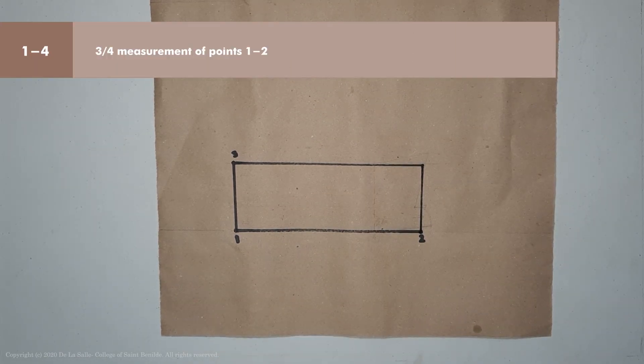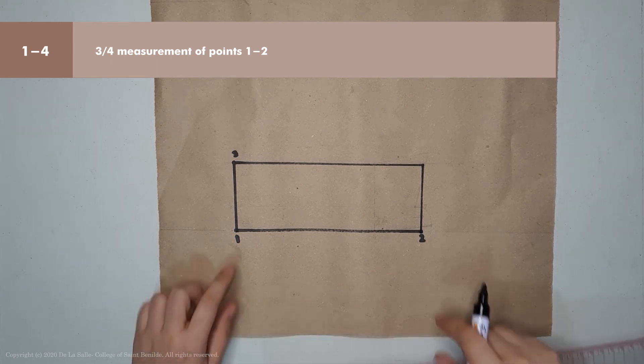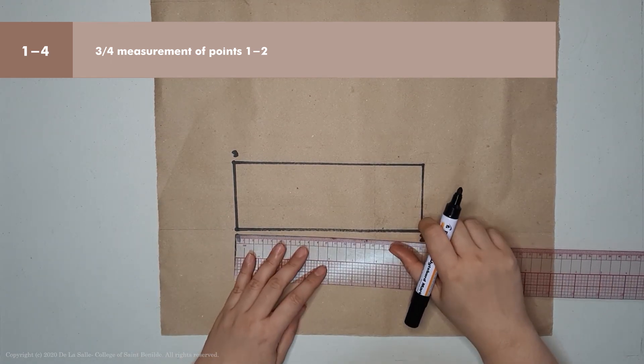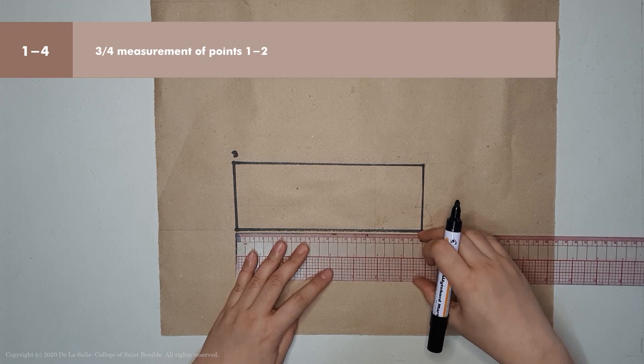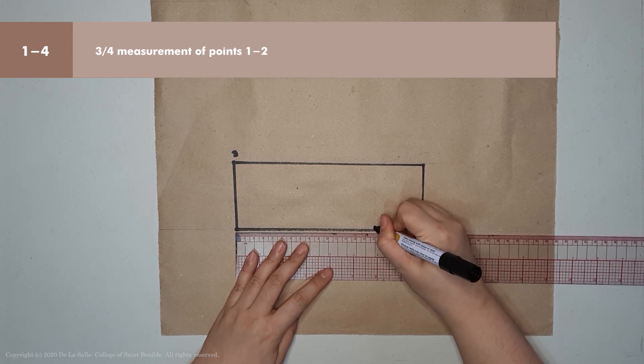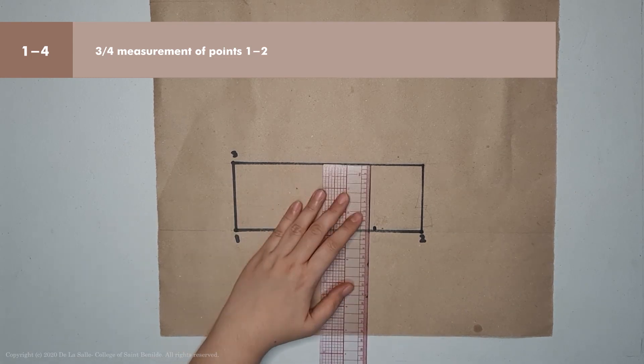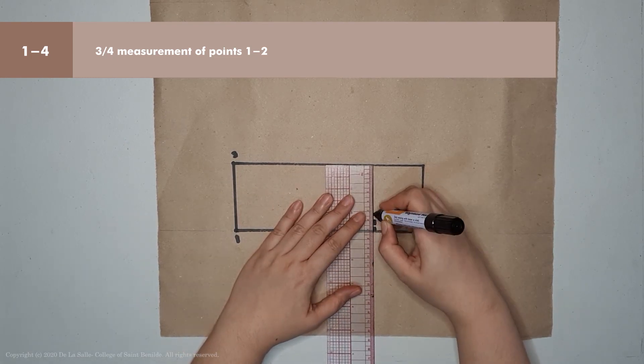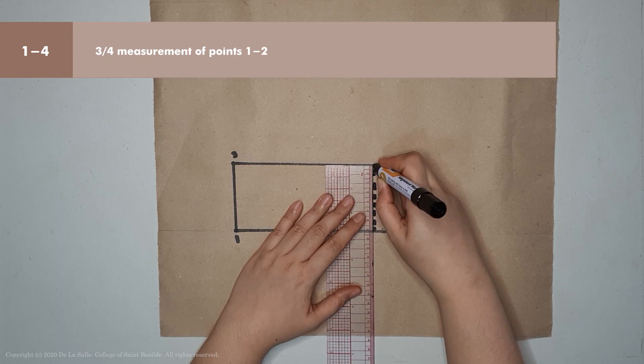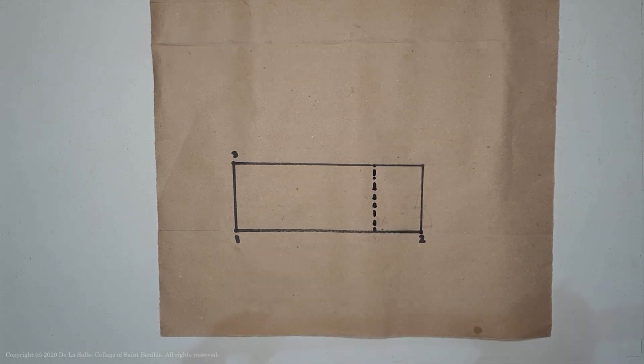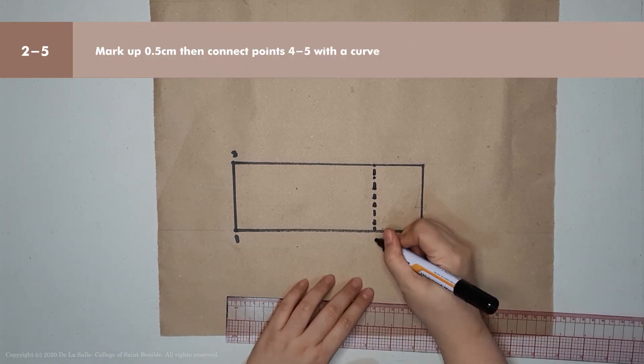Next is points 1 to 4. Points 1 to 4 is three-fourths of the measurement of 1 to 2. So measure that, get your three-fourths, and mark. That's point 4.